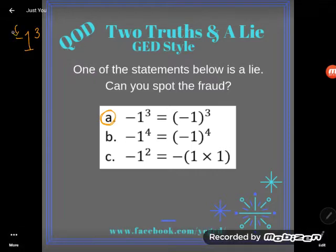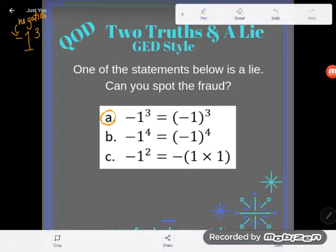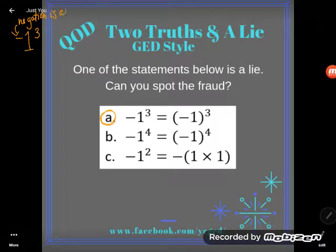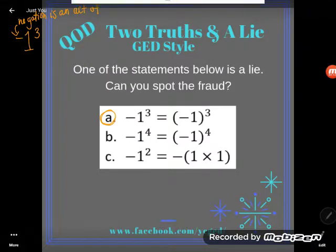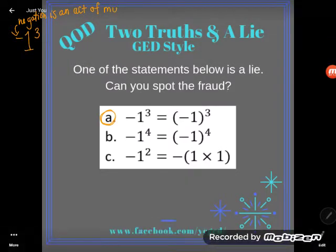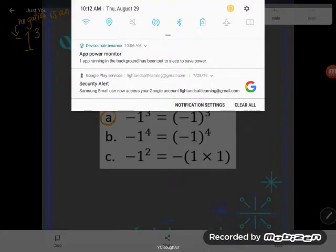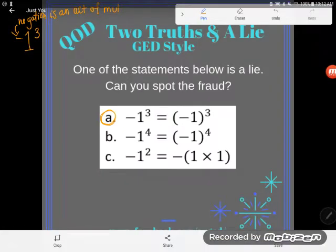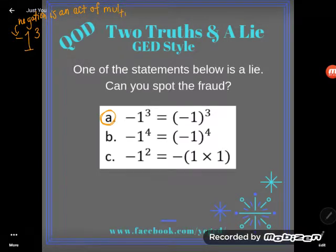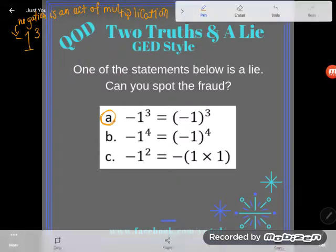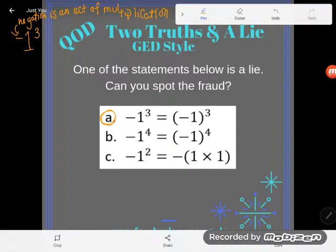This one is being negated—it's being made into a negative. Negation is an act of multiplication. So it's like that negative sign and that one are multiplying. So negation is an act of multiplication.